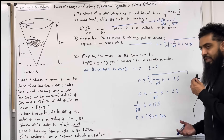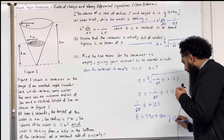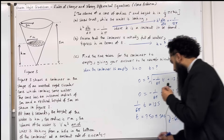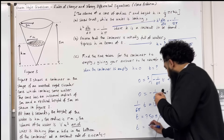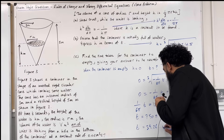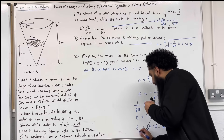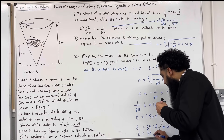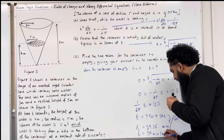Converting to minutes by dividing by 60: t = 750π ÷ 60 = 39.26... minutes. Rounding to the nearest minute gives 39 minutes. That completes Part C of the exam-style question.